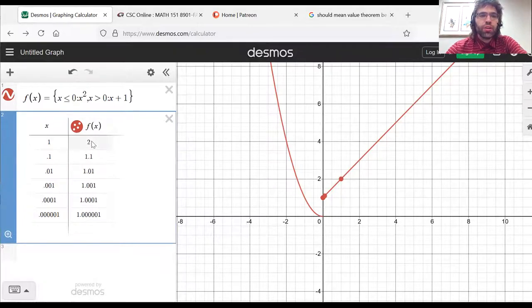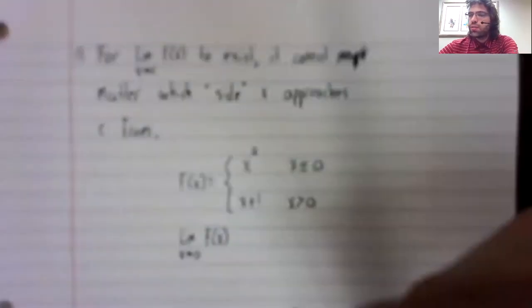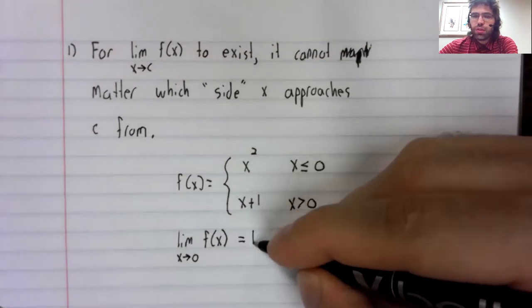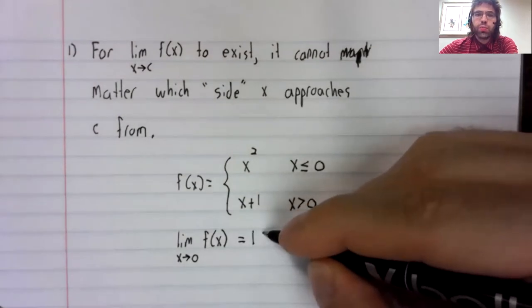And we look at what the function is doing, and it sure looks like it's approaching one. I think maybe we should say that the limit is one.